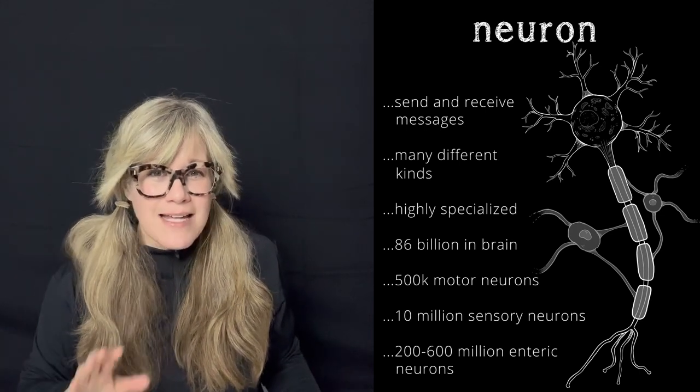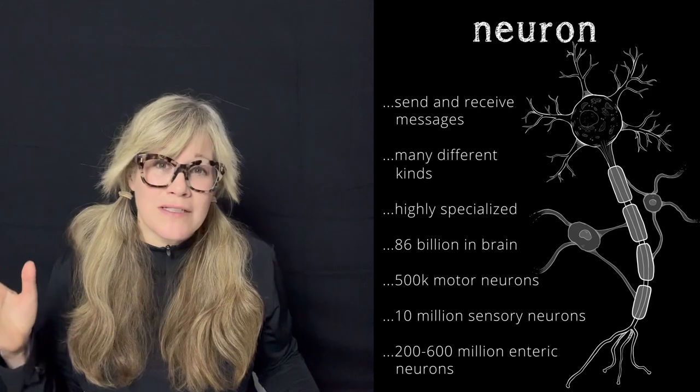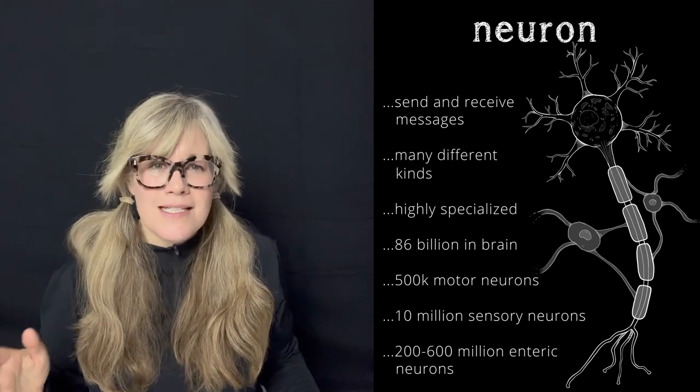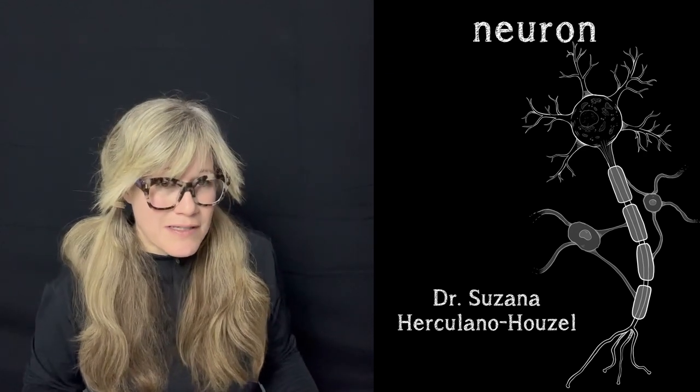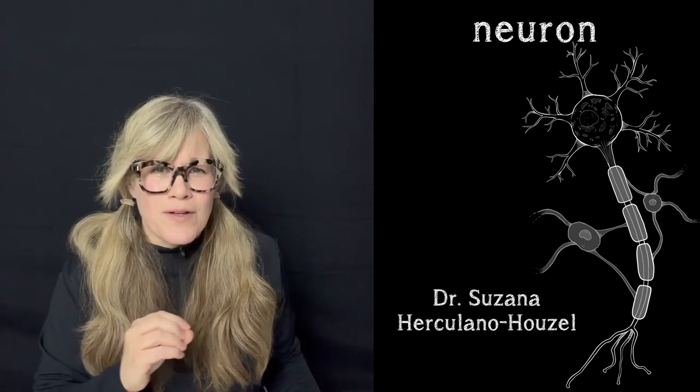For a long time, it was believed that the brain contained 100 billion neurons, but neuroscientist Susanna Herculano-Houzel figured out a more accurate way to count them than had been previously attempted. In fact, she couldn't find where the original count of 100 billion neurons came from, so she devised an experiment by which she dissolved a human brain into what she calls brain soup, and from that she was able to identify and count neuronal nuclei. She and her colleagues counted 86 billion neurons in the brain on average.